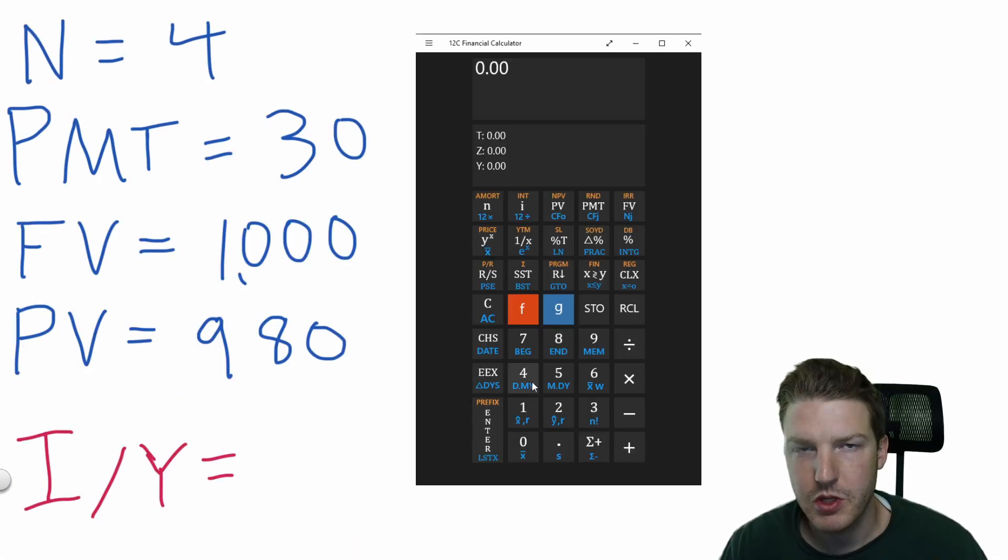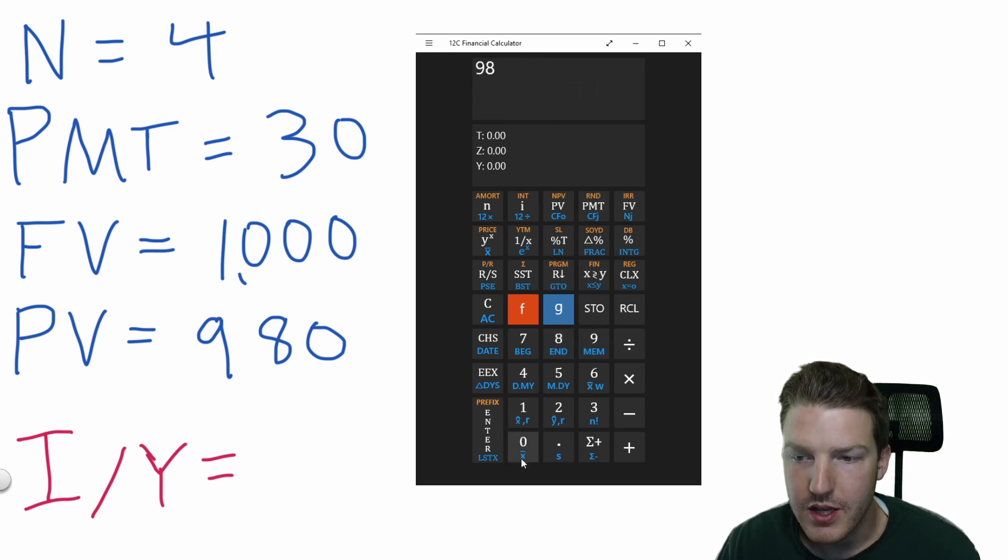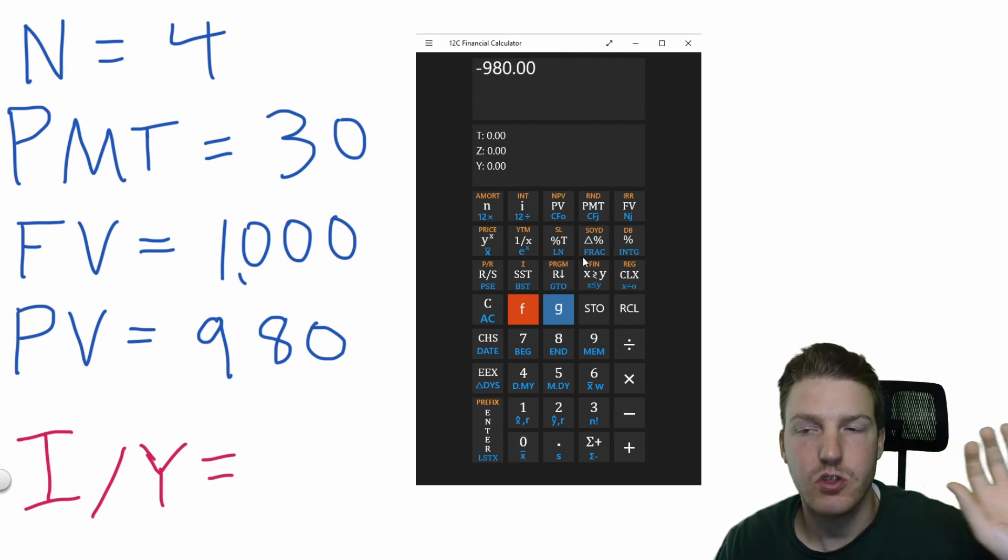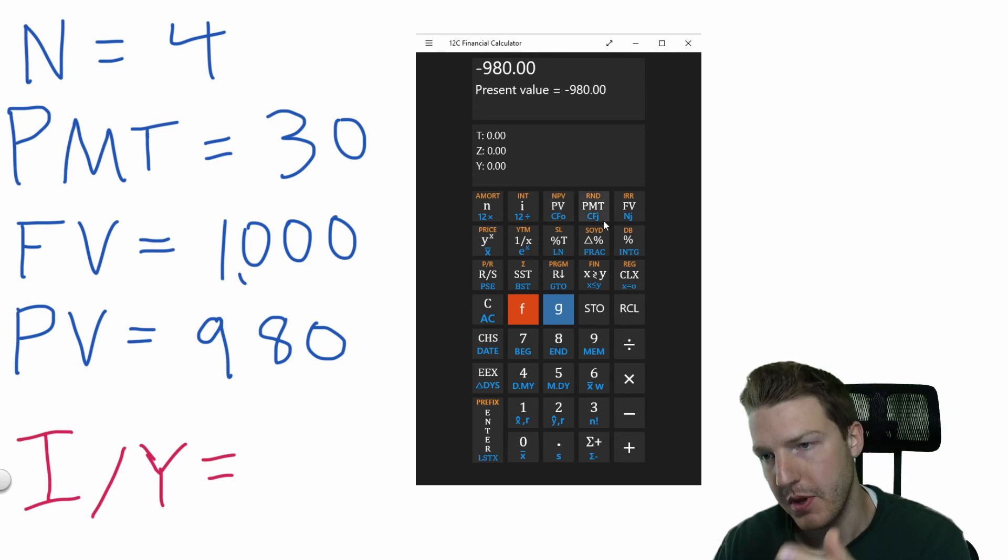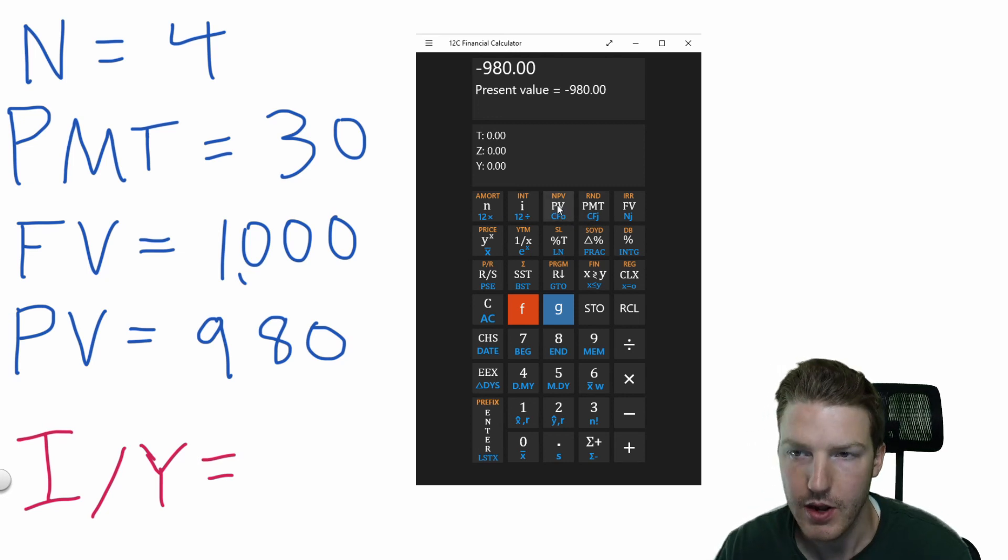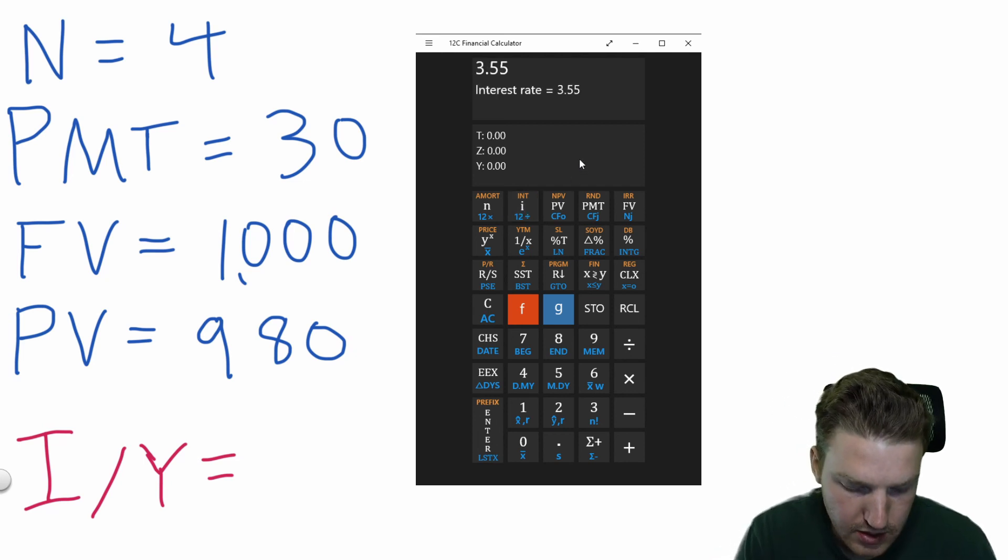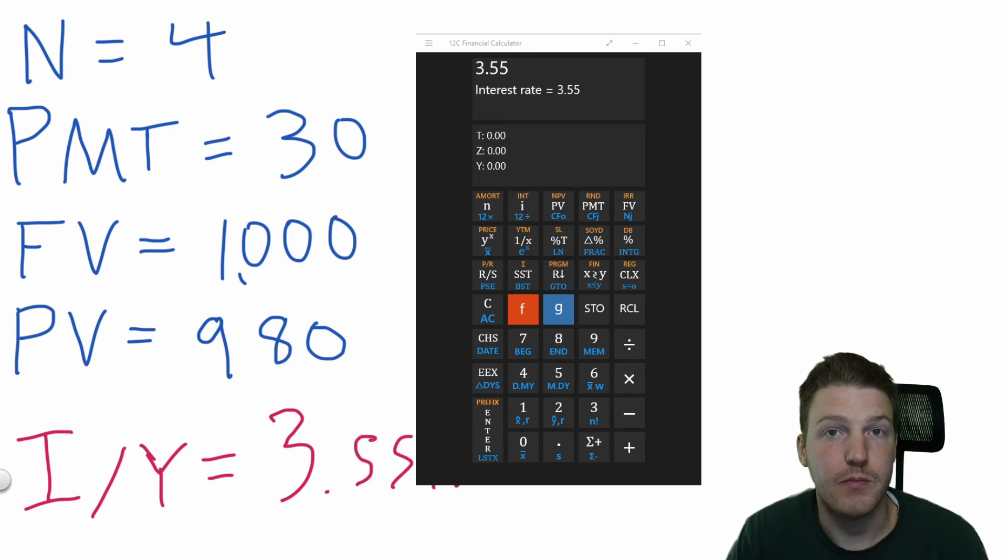This will be very similar to our other uses of the financial calculator. So we'll start with four for the number of periods, 30 for the payment, 1000 for future value. But now when I'm putting in present value, I need to make it negative to show that there's an outflow of money at the beginning, and then inflows with the payments and the future value later on. So make sure to make that negative, and then compute the yield to maturity, which is 3.55%. And there you have it.